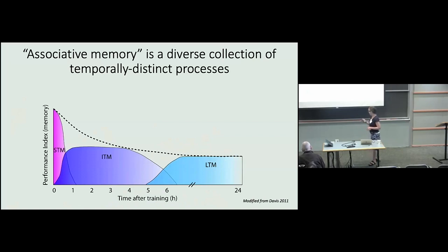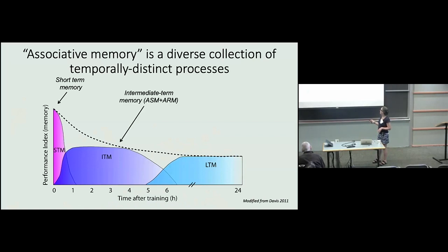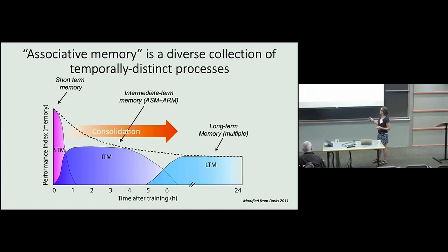Flies, like mammals, have multiple types of associative memory with different phases. We have short-term memories that last on the order of half an hour, intermediate-term memories that last for several hours — and there are multiple types of intermediate-term memory — and long-term memory, which we define as being over 24 hours, probably with multiple molecular pathways. There's an obvious timing issue with these different phases of memory, but there's also another interesting timing issue, and that is consolidation. That's what I'm going to talk about — some of the mechanisms important for consolidation.